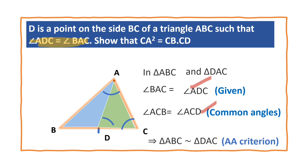We should be very careful while writing the correct order of vertices. Angle A is equal to angle D, and angle B is equal to angle A, with angle C being common. So we have written the triangles in the correct order of vertices.